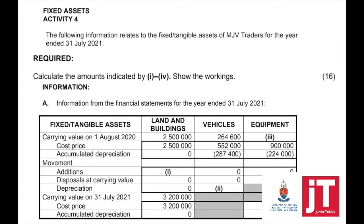The following information relates to the fixed or tangible assets for the year ended 31 July 2021. It is always important to understand when your accounting period ends and when it starts.